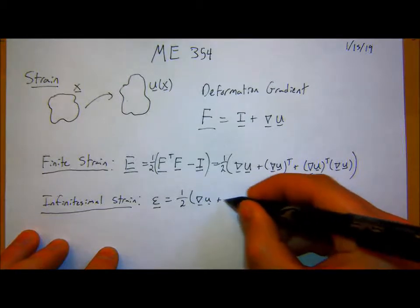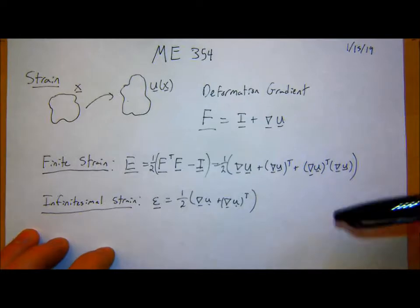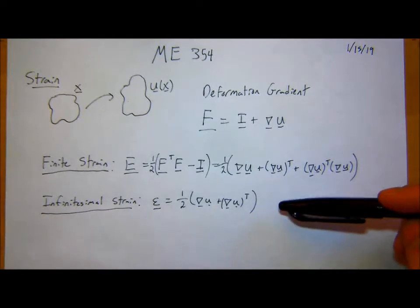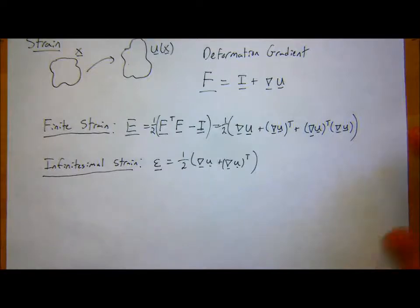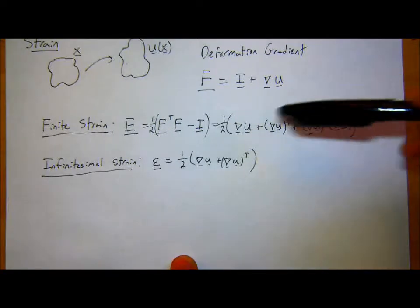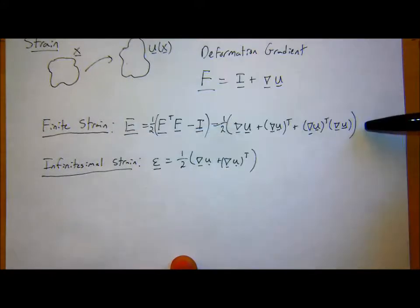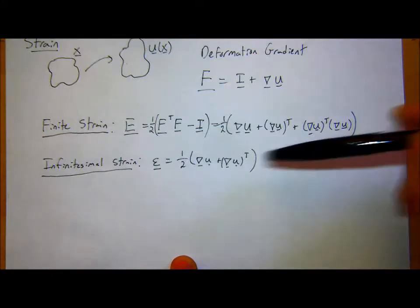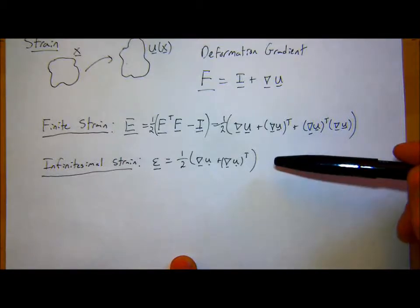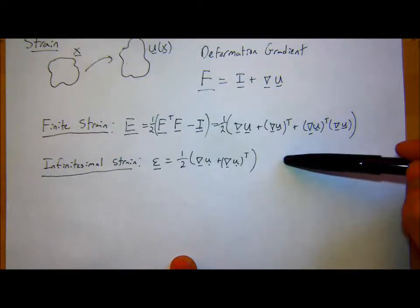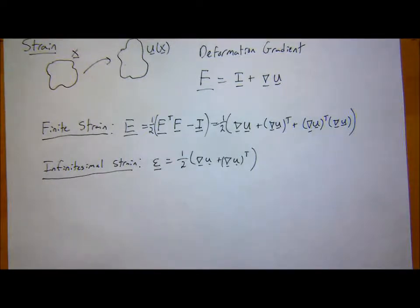So this is a very general definition of strain. Here we're defining this starting from a deformation gradient, going to a finite strain — true for any and all strains applied to the body — and moving to a small strain, our infinitesimal strain, which is only true for small strains on the body. And this is our nice engineering approximation because we're engineers and we like to ignore higher-order terms because they make things complicated.